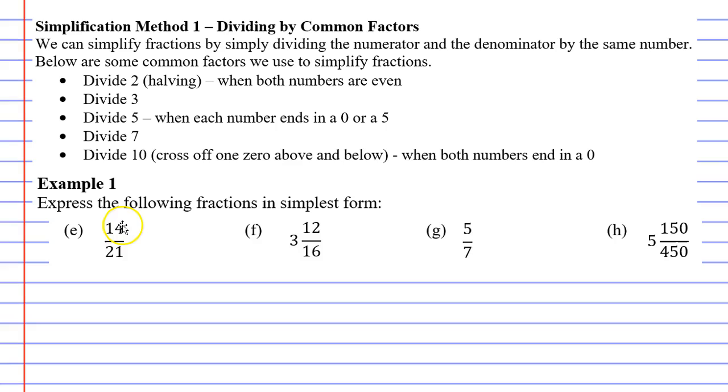We have question E with 14 over 21. They are not both even. They do not end in a 0, and they do not end in a 5 as well. So, I reckon we've got to divide by 3 or divide by 7, and both these numbers look like a multiple of 7 to me, so I'm going to try that.